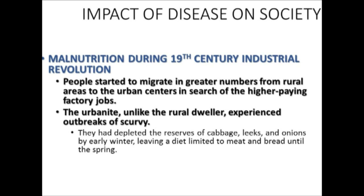By the 19th century, the Industrial Revolution kicked in. People began migrating in great numbers from rural areas toward urban centers in search of higher-paying factory jobs. The urbanites, unlike rural dwellers, started to experience outbreaks of scurvy. They had depleted reserves of cabbage, leeks, and onions — all high in vitamin C — over the winter. In cities there were no storage facilities and no grocery stores, leaving a diet limited only to meat and bread until spring.